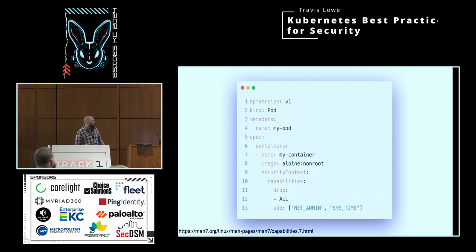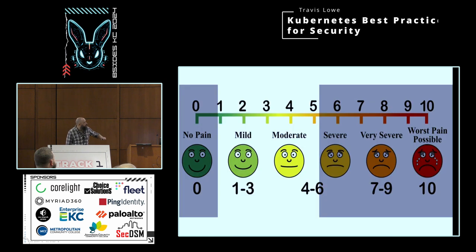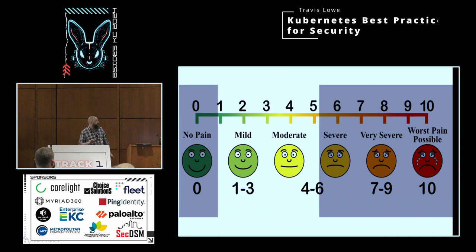If everything is self-contained — if it's just making a database call or something like that — you can probably just drop them. But if you need to add capabilities, you can add the additive line on line 13 and specify the very specific capabilities that you need. In this example I have sys_time added. The question of enforcement — like I said, we're going to get to that — because right now everything you're seeing is still on the application owners to implement.